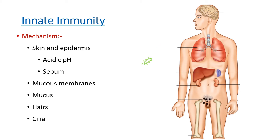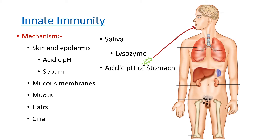If the pathogen tries to enter through the mouth, saliva contains lysozyme which destroys pathogens entering that way. Even if it enters through the mouth, the stomach has a very high acidic pH which destroys any pathogens that might have entered. The pathogen can also try to enter through our eyes, where tears delay the entry of pathogens. These are the basic mechanisms by which innate immunity acts.